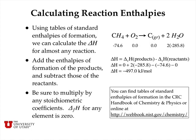We can use these standard enthalpies of formation to calculate the ΔH for almost any reaction. For example, in the methane reaction with oxygen to form graphite plus two water molecules, we look up the enthalpies of formation of the products and subtract the enthalpies of formation of the reactants to get the overall ΔH for the reaction as −497 kJ per mole. Remember that stoichiometric coefficients are important: we have two water molecules, so when we look up the enthalpy of formation of liquid water — which is −285.8 kJ per mole — we multiply that by two. Don't forget to multiply by the stoichiometric coefficients for the balanced chemical reaction. The enthalpy of formation for any element, in this case graphite and oxygen, is zero.